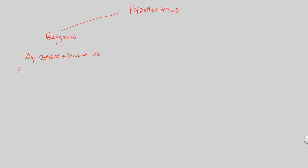The hypothalamus can either indirectly or directly cause some sort of influence — specifically in regards to hormone secretion. It indirectly or directly controls all hormone secretion. Key word here is all. That's why I think of it as the boss: it either says yes or no to secreting a particular hormone, and that yes or no may be indirect or direct, depending on the hormone in question.